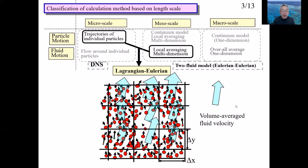This illustration shows an image of the Lagrangian-Eulerian method. For particles, the velocity and position of individual particles are calculated using the Lagrangian method. For fluid, the calculation is made using the Eulerian method. Equations and variables such as velocity, pressure, and density are spatially averaged over a volume with the size of delta x and delta y.